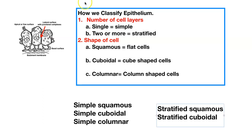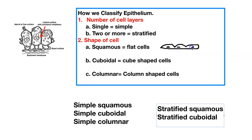We are going to draw a squamous cell — a flat cell. I'm going to add my nucleus. Pretend we have three squamous cells here together. Remember, these cells have no space in between them. The squamous cells are flat and their nuclei are flattened. So that's basically what simple squamous looks like right here.